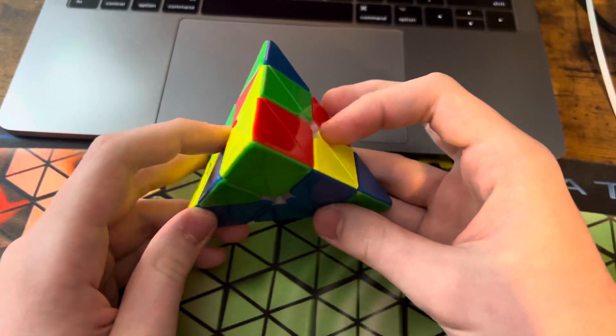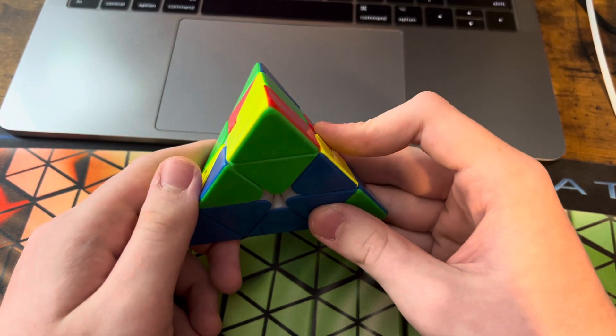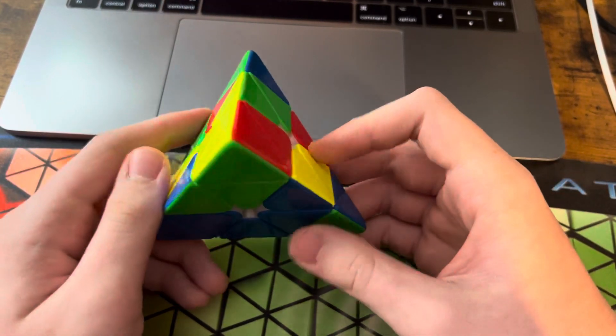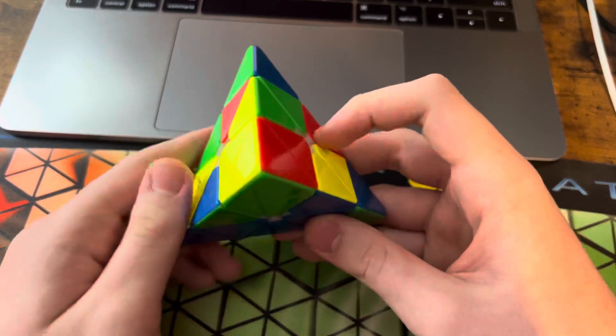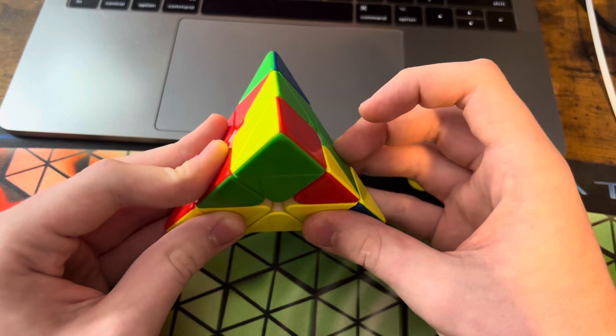So on solve 3, I'm pretty sure everybody did the 2-move blue layer like that. The only difference in people's solves, I think, was whether or not they did the layer like that.